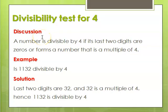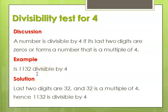A number is divisible by 4 if the last two digits are zeros or form a number that is a multiple of 4. For example, look at 1,132. Is this number divisible by 4? The last two digits are 32. Now, 32 is a multiple of 4, and therefore 1,132 is divisible by 4 since the last two digits form a multiple of 4.